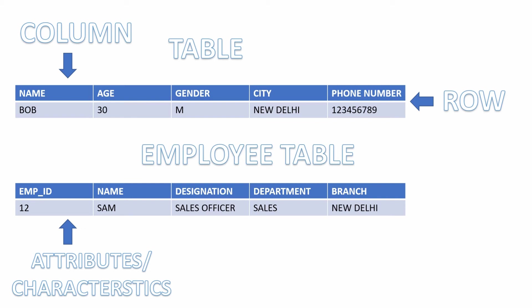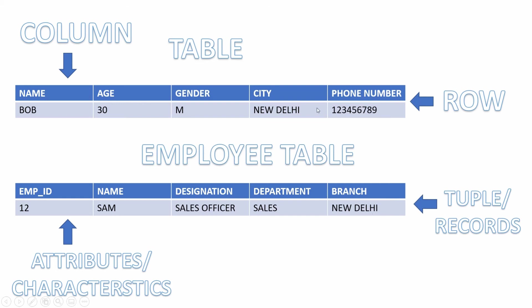All this information combined is also referred to as records, or sometimes as a tuple. To be more specific, a single row in a table is referred to as a tuple. So all the details of Bob will form a tuple, or a row, of the customer table.